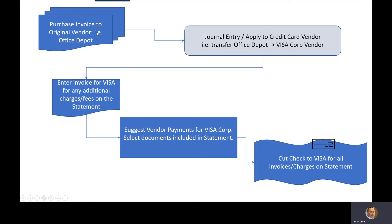So Office Depot, as an example, we're actually going to create an invoice for Office Depot for the products and services that we've purchased. From there, we're going to create an entry that actually transfers that liability or transfers that payable from Office Depot to our Visa corporate vendor. So now it's going to be residing on that Visa card. And then when it comes time to actually do the statement, if there's any additional fees like interest charges or late fees, those fees can then be entered as a direct invoice to Visa, further building up the balance owed to Visa.